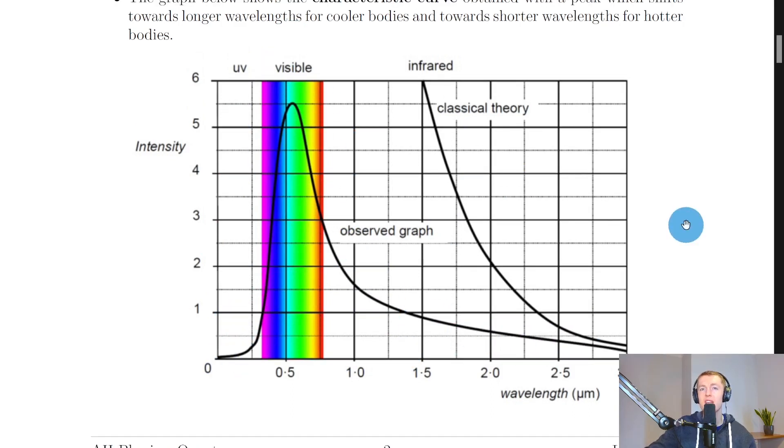The equation that Rayleigh and Jeans came up with was based on classical physics. You can see that it roughly follows the same expected shape for long wavelengths, but at much shorter wavelengths the graph tends towards infinity. It just keeps rising and rising up.